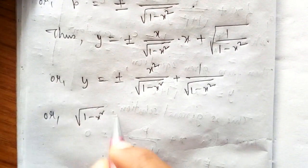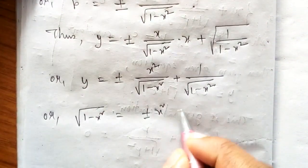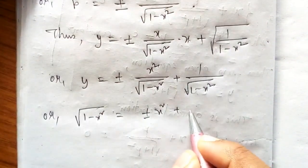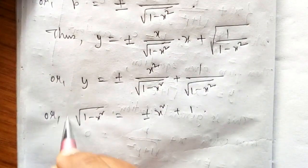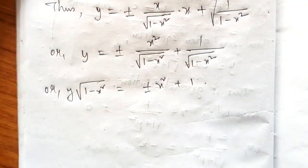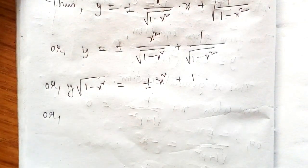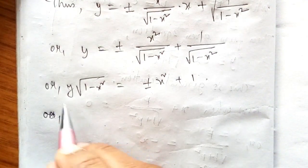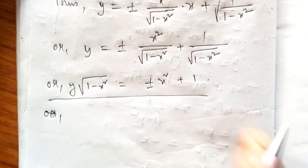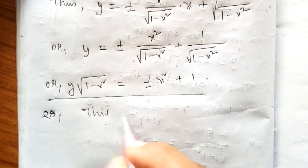Therefore y · √(1 − x²) = ±x² + 1. This is the required singular solution.